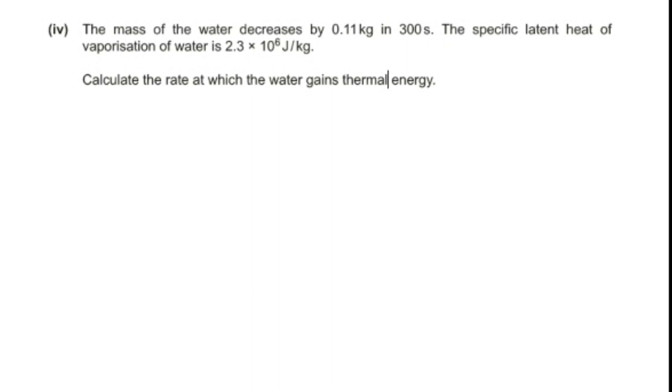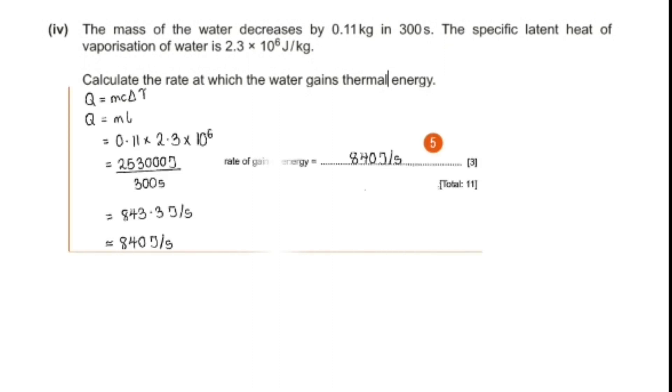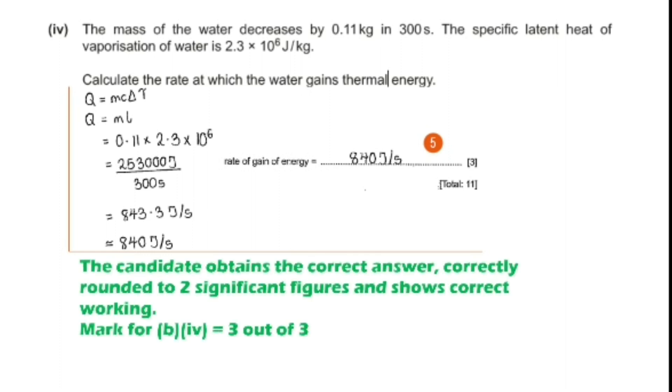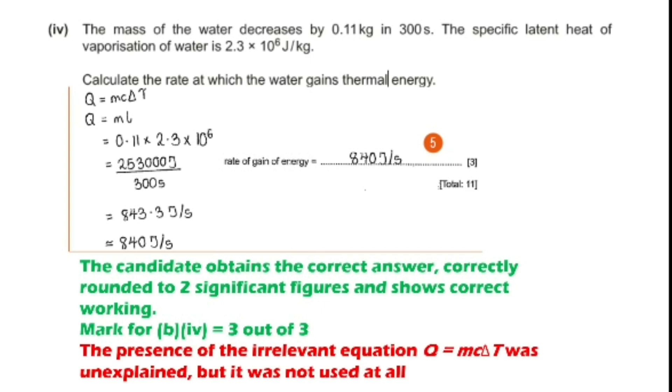This is the next question: the mass of water decreases by 0.11 kg in 300 seconds. The specific latent heat of vaporization of water is given. Calculate the rate at which the water gains thermal energy. This is a sample answer by a student. The examiner's comment: the candidate obtains the correct answer, correctly rounded to 2 significant figures, and shows correct working. Three out of three marks is given. But still the examiner has to say something: the presence of the irrelevant equation, q equals mc delta T, was unexplained but this was not in use, so the child has not lost marks, but it was unnecessary, which was a remark by the examiner.